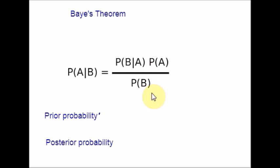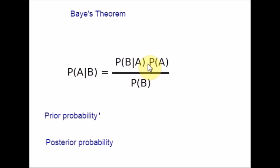Let us see the statement of Bayes' theorem. Bayes' theorem relates the conditional and marginal probabilities of stochastic events A and B. The formula is: probability of A given B is equal to probability of B given A, times probability of A, divided by probability of B. Now let me explain what each term in Bayes' theorem means.